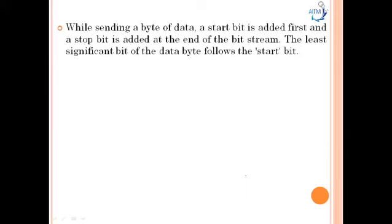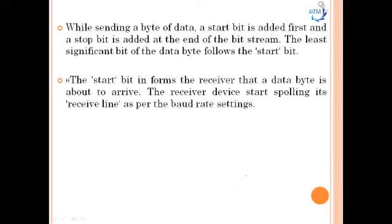The start and stop of communication are indicated by inserting special bits in the data stream. While sending a byte of data, a start bit is added first and a stop bit is added at the end of the bit stream. The least significant bit (LSB) of the data byte follows the start bit. The start bit informs the receiver that a data byte is about to arrive.